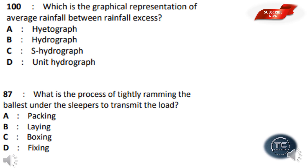What is the graphical representation of average rainfall plotted between the rainfall axis? The options are: hydrograph, S-hydrograph, unit hydrograph. The answer is Option B — hydrograph. A hydrograph represents rainfall density versus time.